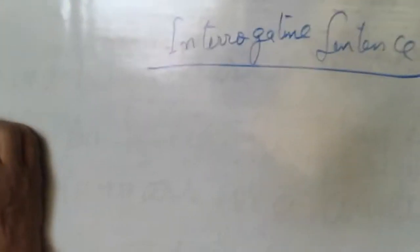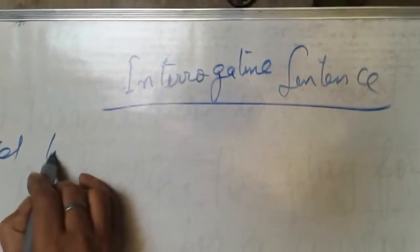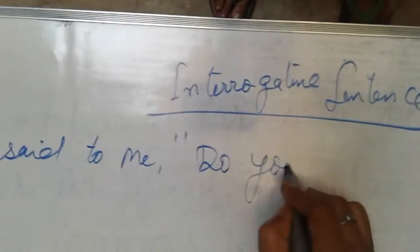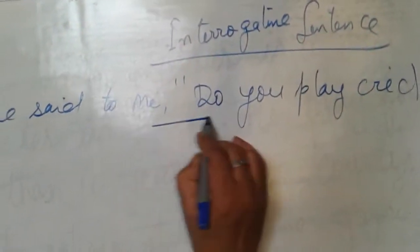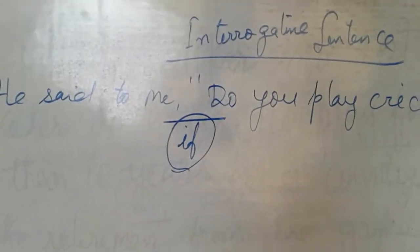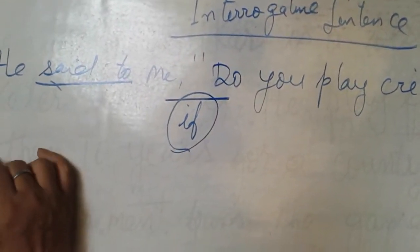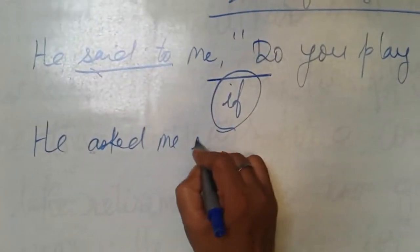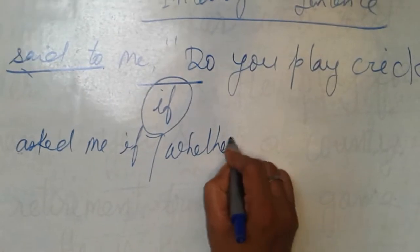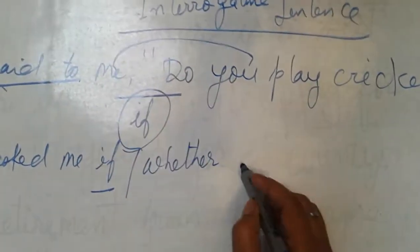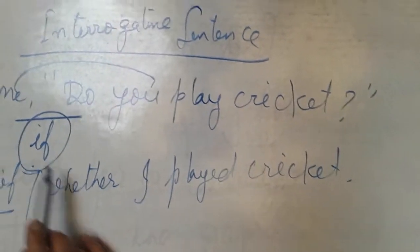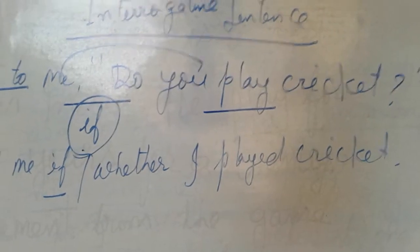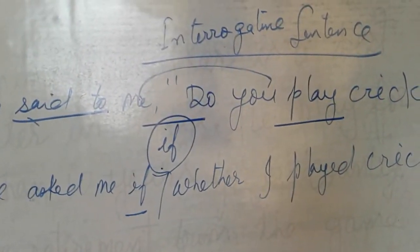Today we will discuss the interrogative part of narration. I am writing a sentence: he said to me, 'Do you play cricket?' Here you have to write 'if' instead of 'that', and instead of 'said to', you write 'asked'. He asked me if I played cricket. This is simple present tense changed into simple past.